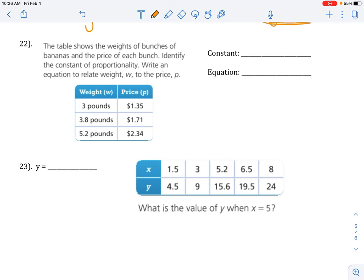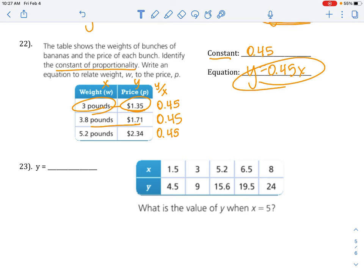Number 22, the table shows the weight of bunches of bananas and the price. Identify the constant of proportionality. Remember that is a synonym for unit rate. Write an equation. These already have w and p but if you want to put an x and y just because you're comfortable, that's fine. You're still taking the second number divided by this first number. 1.35 divided by 3 gives you 0.45, that means it's 45 cents per pound. The next row divide 1.71 by 3.8 you get the same unit rate. So is it proportional? Yes. What is the constant? 0.45. What is the equation? Y equals 0.45 x.